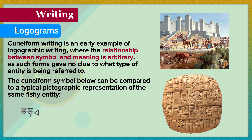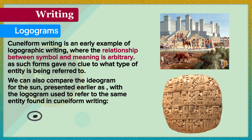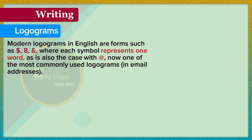The cuneiform symbol can be compared to a typical pictographic representation of the same entity. We can also compare the ideogram for the sun, presented earlier, with the logogram used to refer to the same entity found in cuneiform writing. Modern logograms in English are symbols such as 8, where each symbol represents one word, as is also the case with the @ symbol, now one of the most commonly used logograms in email addresses.